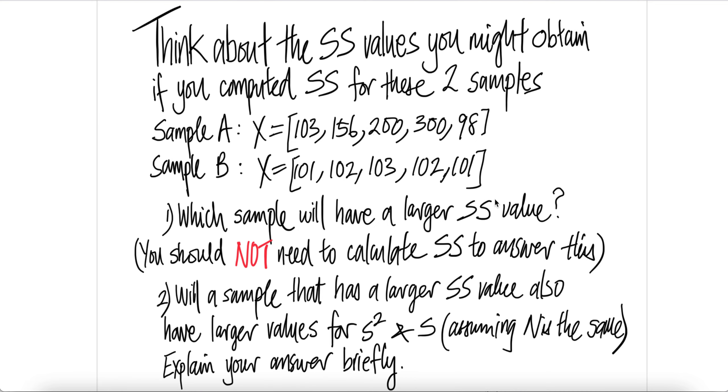Which sample will have a higher sum of squares value? You should not need to calculate sum of squares to answer this. By looking at this, you can see that this one has bigger variance or dispersion compared to the sample one. So the answer is sample A.